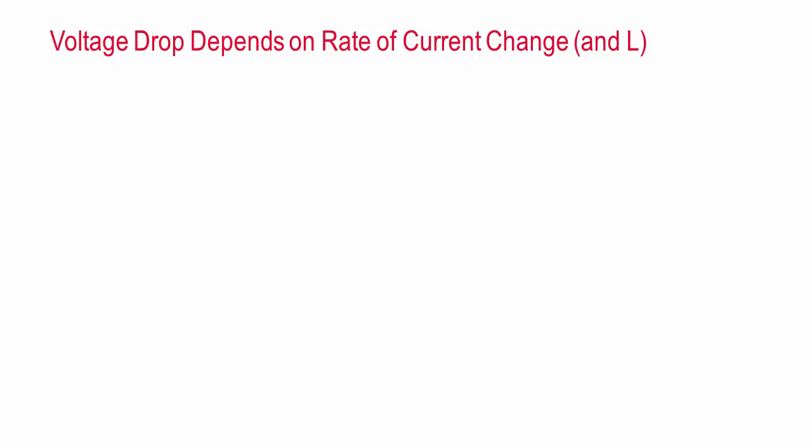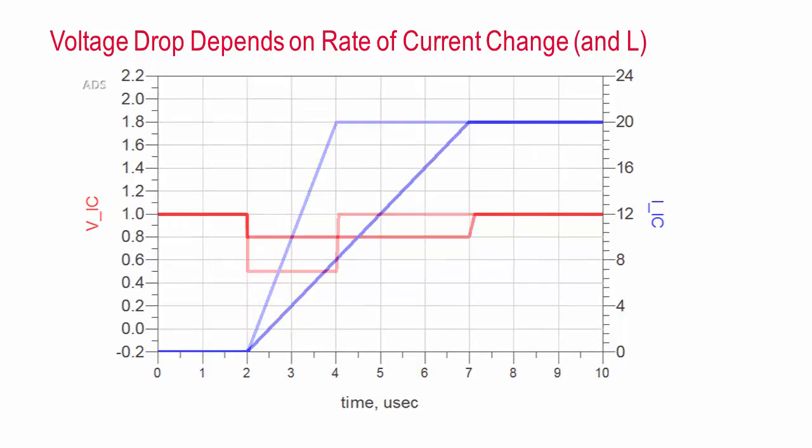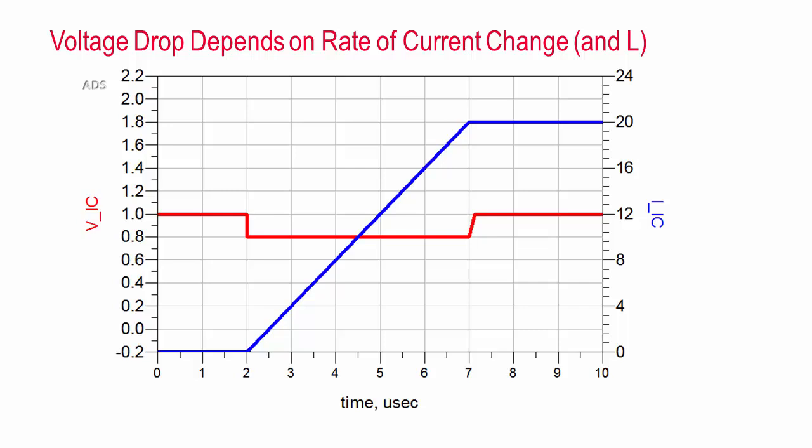You could operate the IC at a slower clock rate, so current transitions would also be slower. Here I am changing the current rise time from 1 to 2 to 5 microseconds. The voltage drop decreases with slower current pulse rise times.